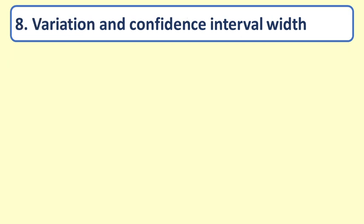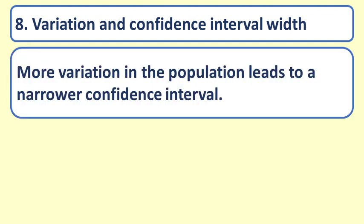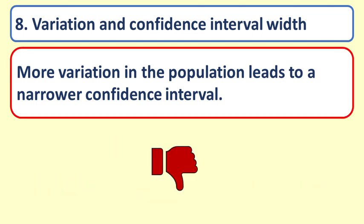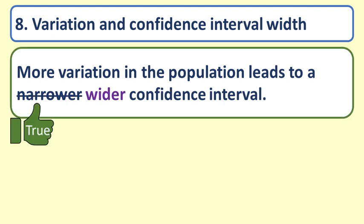Question 8: Variation and confidence interval width. A more varied population will lead to a narrower confidence interval. False. Increased variation within the population leads to a larger confidence interval. If a population has low variation, then a narrower confidence interval is possible.